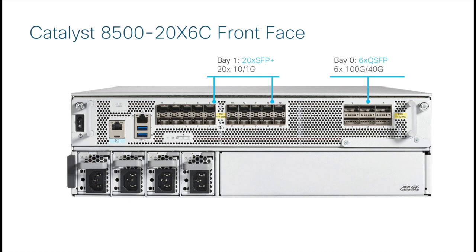The 1/10 gig interfaces are all SFP-plus based and can be independently configured for 1 gig or 10 gig operation depending on whether a SFP or SFP-plus optic is installed. The QSFP28 interfaces can operate in either 100 gig or 40 gig mode, with no dependency between interfaces for choosing 40 or 100 gig. The interface speeds depend only on the type of QSFP optic installed. Note that the QSFP interfaces on the C8500 20X6C do not support a 4x10 breakout as is supported on the C8500 12X 4QC platform.